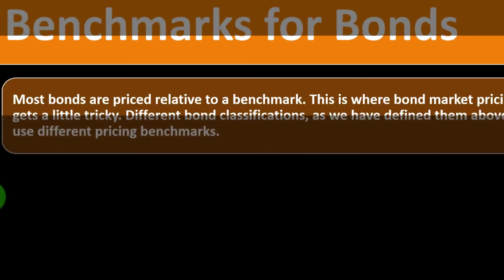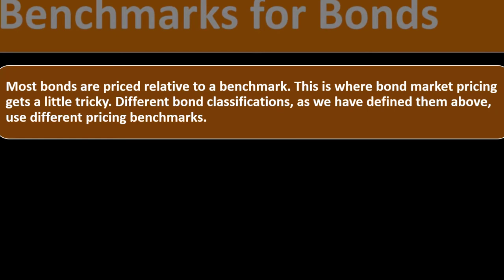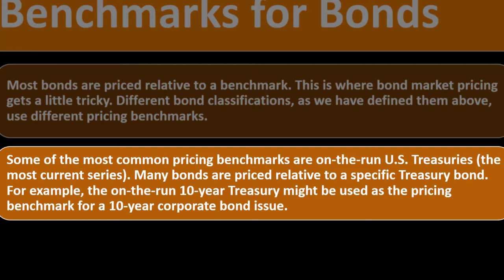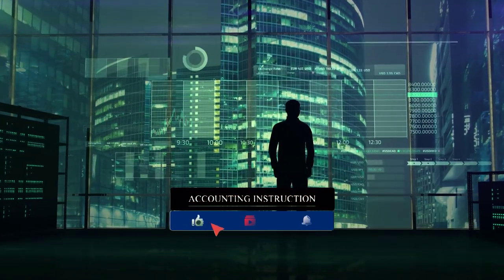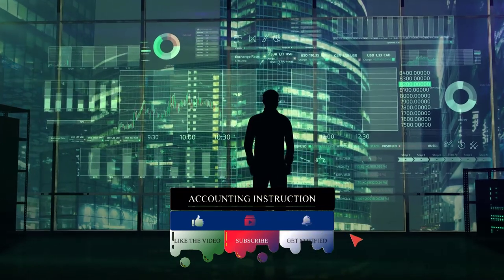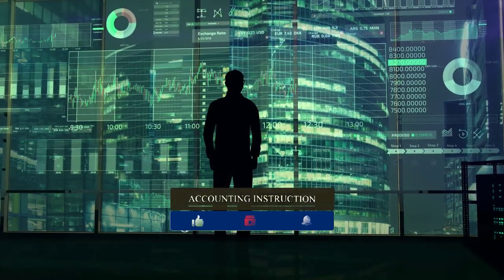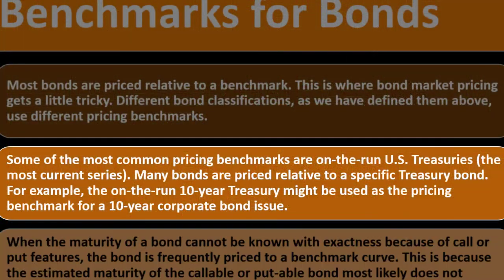Most bonds are priced relative to a benchmark — this is where bond market pricing gets a little tricky. Different bond classifications use different pricing benchmarks. Some of the most common are on-the-run U.S. Treasuries — the most current series. Many bonds are priced relative to a specific treasury bond; for example, the on-the-run 10-year Treasury might be used as the pricing benchmark for a 10-year corporate bond issue. Government bonds make a good benchmark partly because they don't carry the default risk associated with corporate bonds.